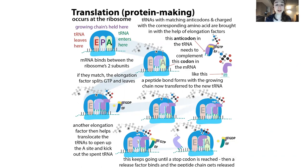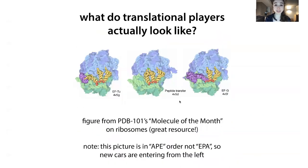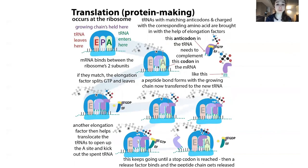The ribosome actually has these two halves. It's got a bunch of different pieces, but it has two main subparts: the large ribosomal subunit and the small ribosomal subunit. The large subunit has the peptidyl transferase center, which is where the peptide is actually going to get transferred from the incoming tRNA — this amino acid is going to get pushed onto here, and then this whole thing is going to shift over.